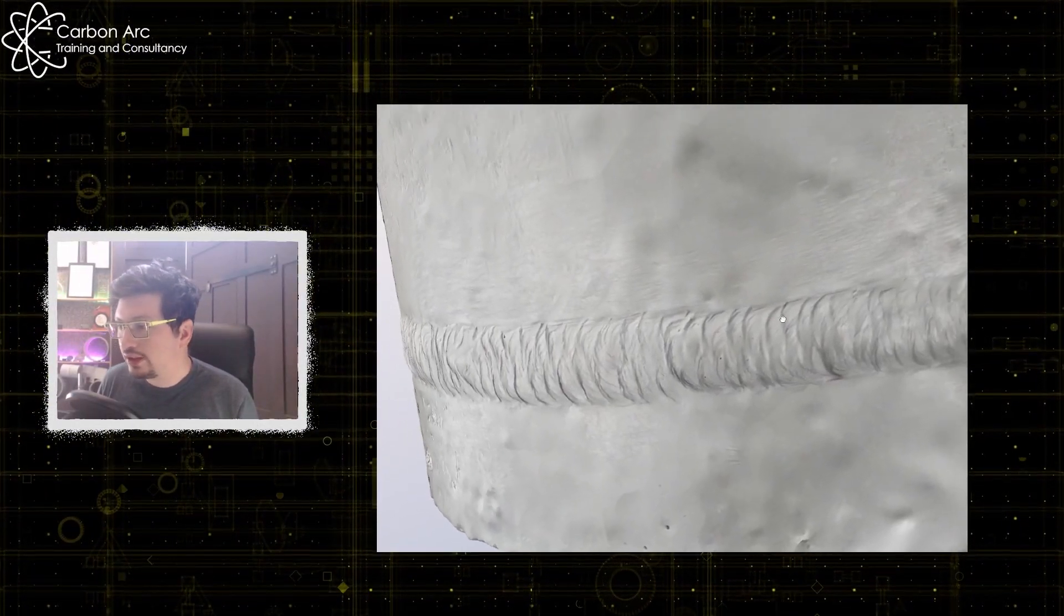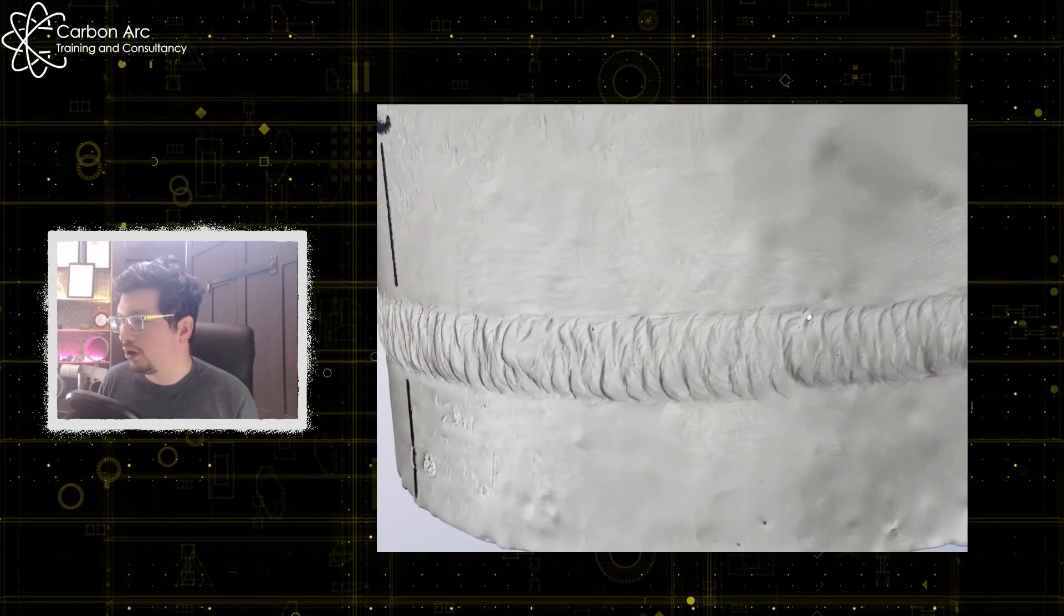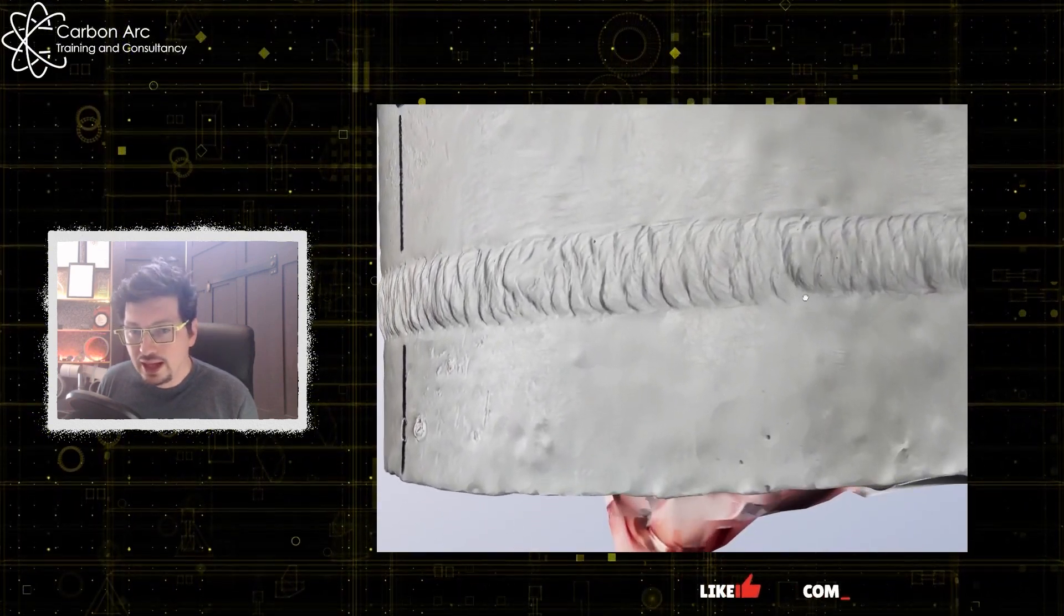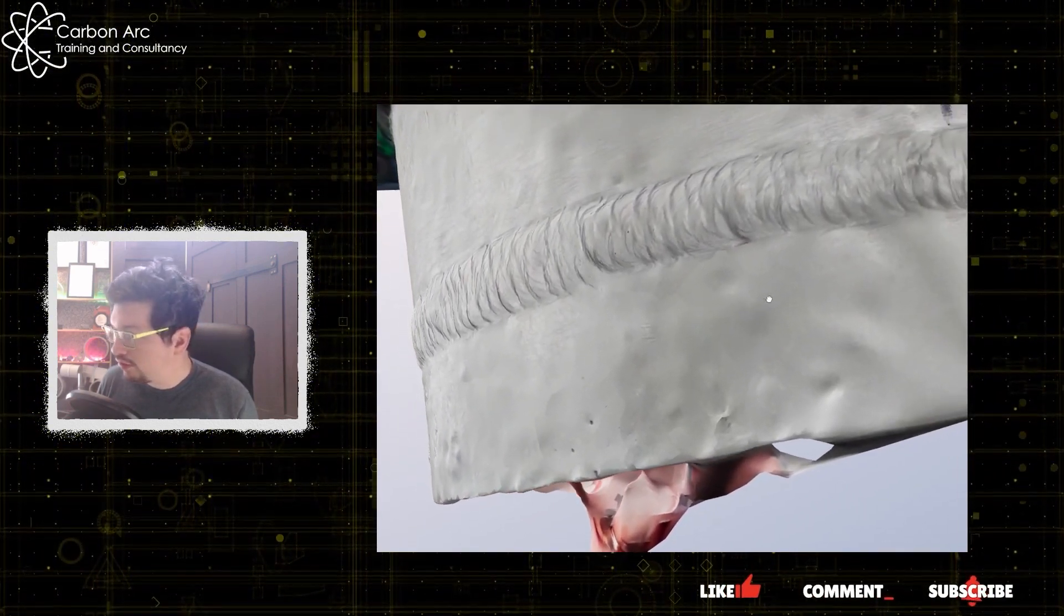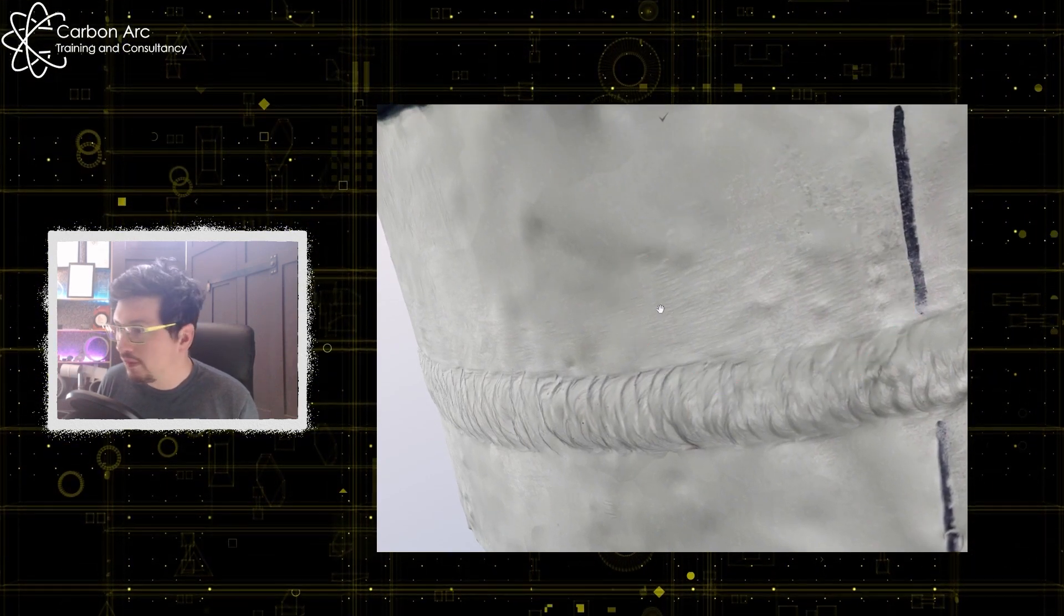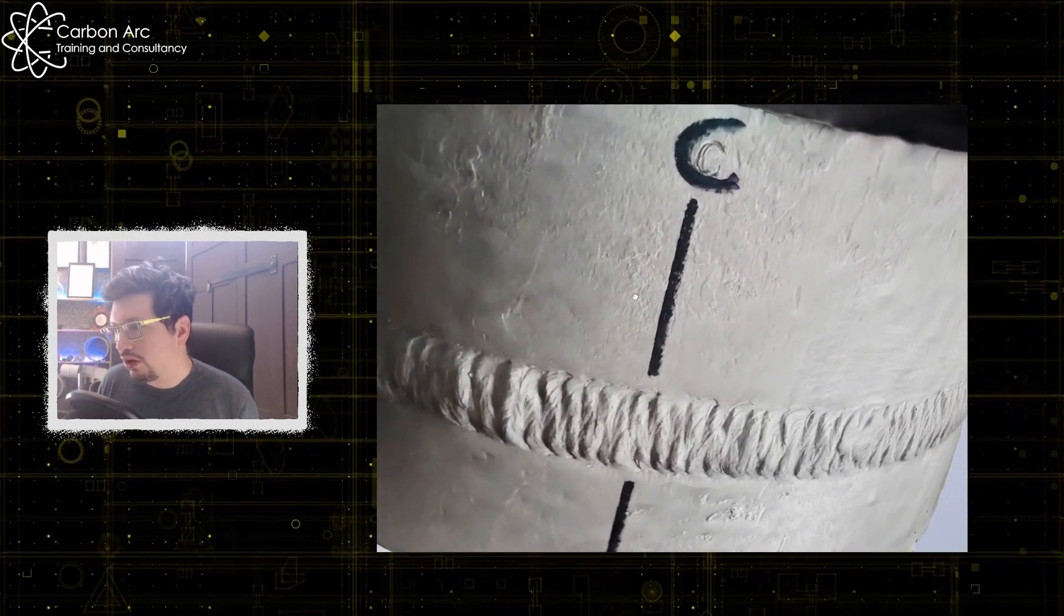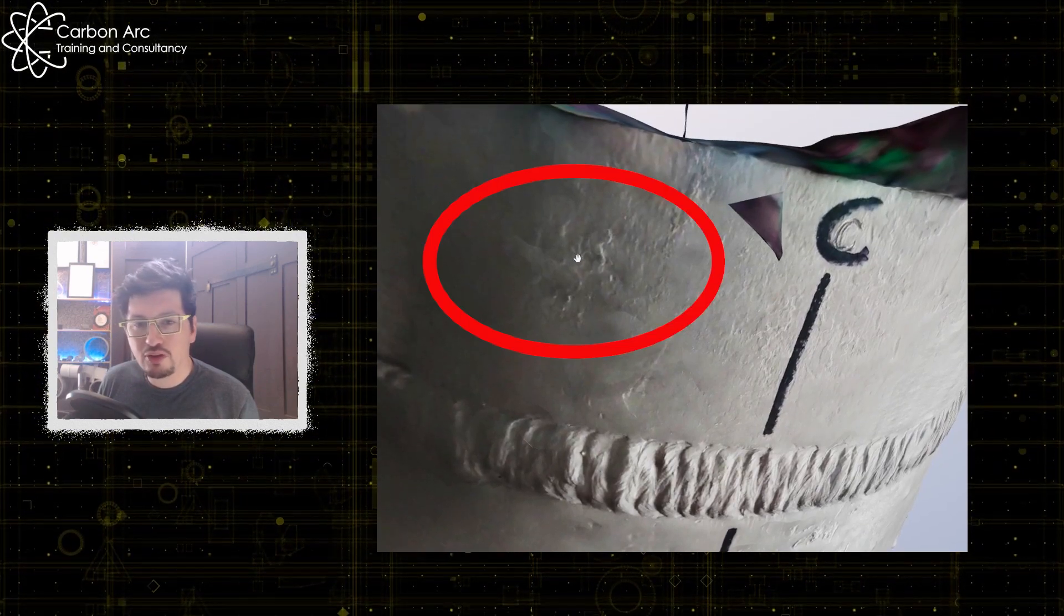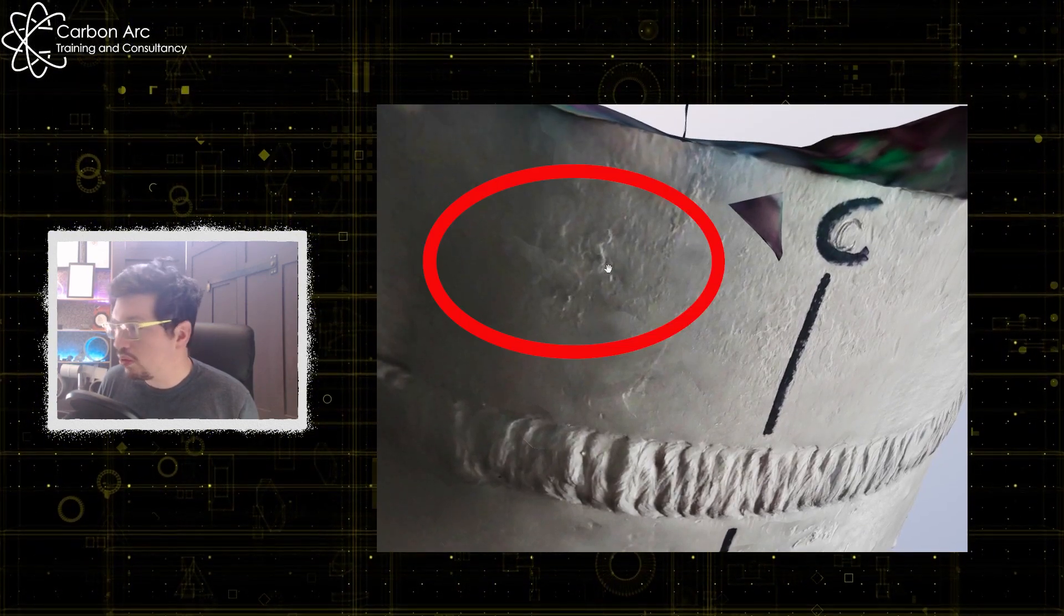So here we are, here's our 3D scan of part of a plastic sample. We can see lots of different features. We can see grinding marks here. Here on this top edge we have a bit of corrosion in this top corner.